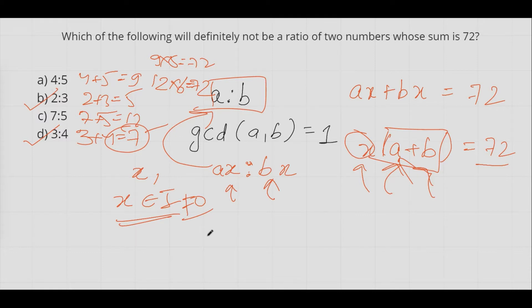So there are two options in this case where the sum of the numbers will never be equal to 72, if the ratios are 2 is to 3 and 3 is to 4. If you have any question please feel free to drop a comment. Thank you.